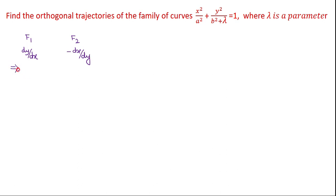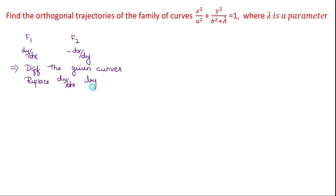The working rule for finding the orthogonal trajectory will be: first, differentiate the given curve or family of curves to get a differential equation. The second step is to replace dy/dx by minus dx/dy. The third step is to solve the resulting differential equation. These are the three main steps in finding the orthogonal trajectories. So let us take the example.